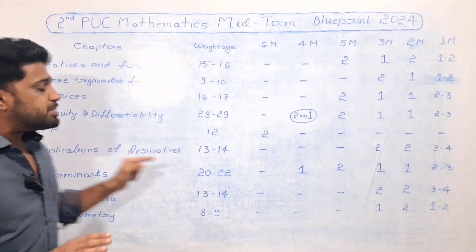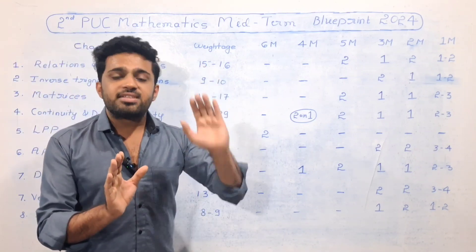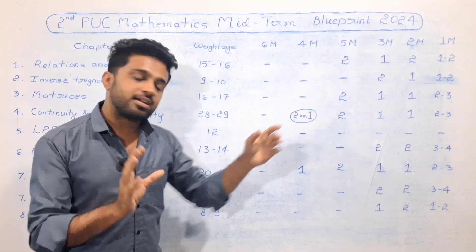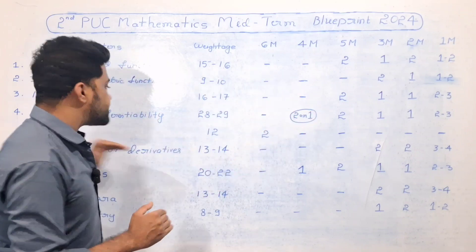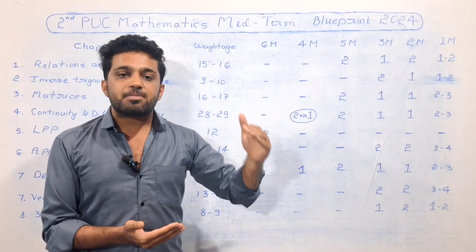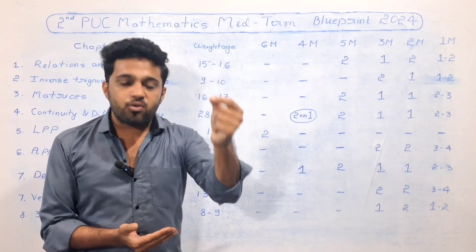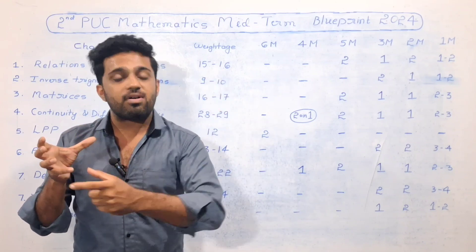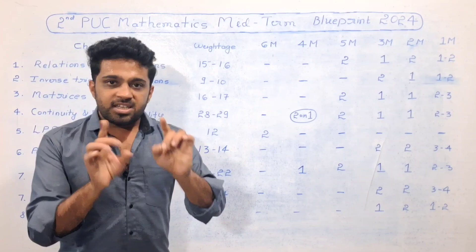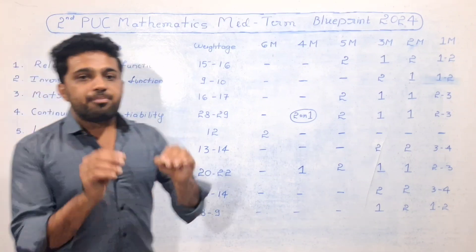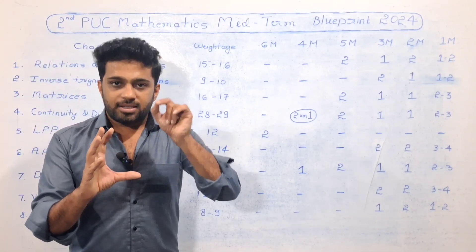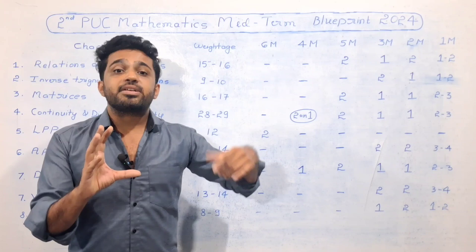Almost every district includes the LPP chapter as Question number 46 — a 6-mark question. This question pattern is consistent across districts. You can rely on this chapter appearing as Question 46 in the question paper.